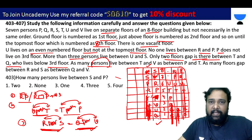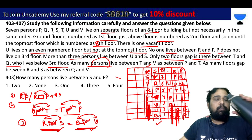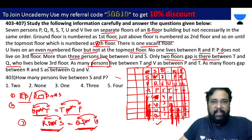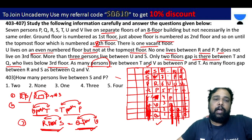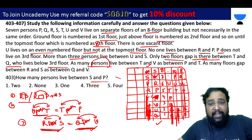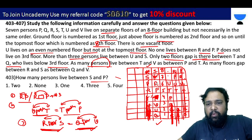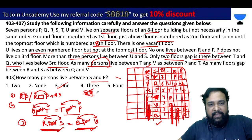Question: How many persons live between S and P? Between S and P, we have only one person. Who is the right answer? Our answer is option C. Only one is the right answer. For problem number 403.